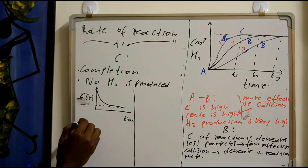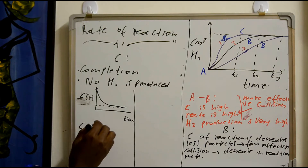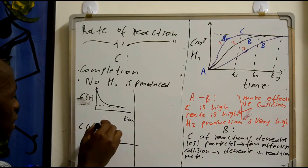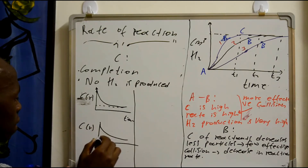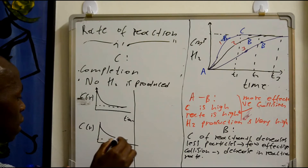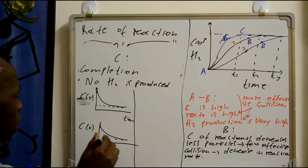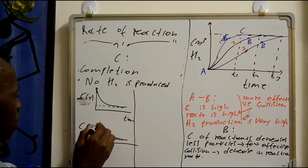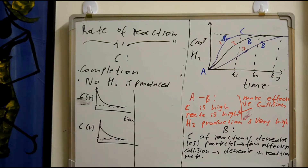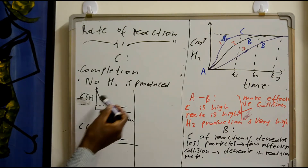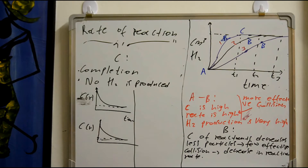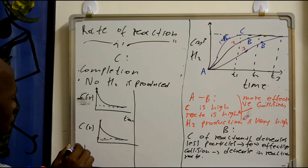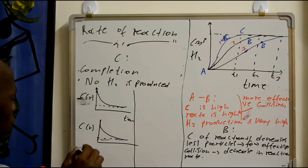Also, the concentration of the reactant which is hydrochloric acid — it's decreasing. So the graph of the reactants is decreasing. But when you consider the product — the gas, which is measured in cm cubed — the product increases until it reaches completion. Now what you must know is we already know about the limiting reactant.